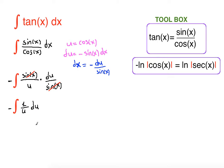The anti-derivative of 1 over u is ln of the absolute value of u plus c. Now we bring u back — u was cosine x — so we write negative ln of the absolute value of cosine x plus c.